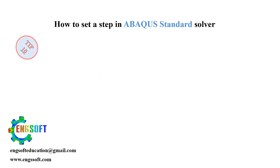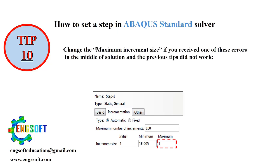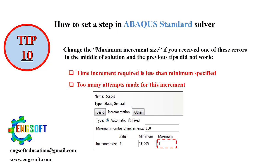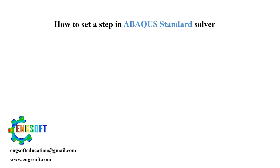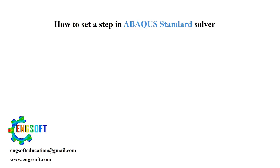Tip 10 — Maximum increment size: If you're encountering errors in the middle of the solution and previous tips haven't helped, change the maximum increment size. Tip 11 — Increase maximum increment size: For slightly non-linear problems where you expect smooth progress, set the maximum increment size up to the full time period to speed things up.